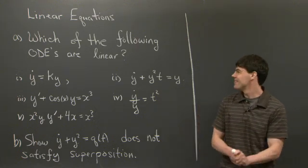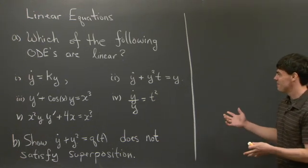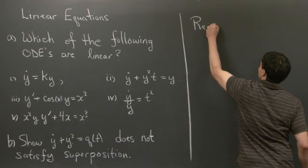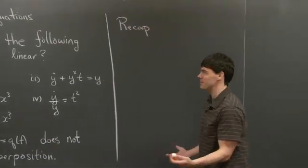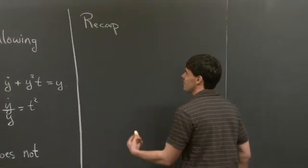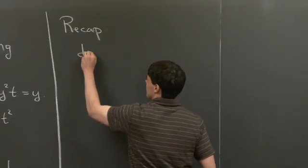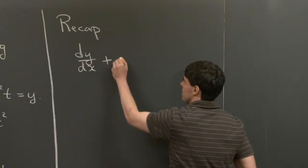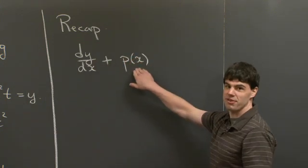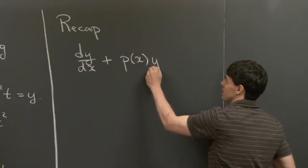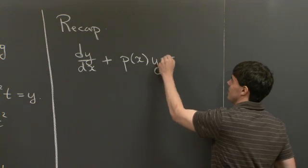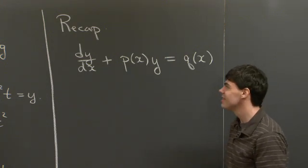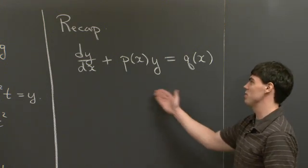Welcome back. So we're asked to figure out which of these equations are linear. To recap: what does it mean for a first order equation to be linear? Well, it means that we can write it in the general form: a function of x times dy/dx, plus some general function of x multiplied by y, equals some arbitrary function q of x on the right-hand side. Every first order linear equation can be rewritten in this form.